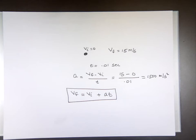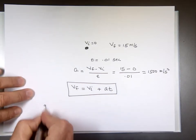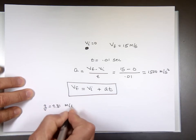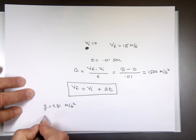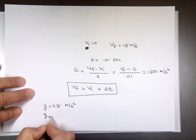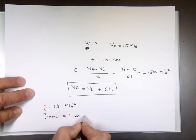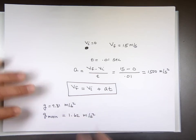Gravity on the Moon, by the way, is almost one-sixth of gravity on Earth. Gravity on Earth is 9.81 meters per second squared. On the Moon, gravity is 1.62 meters per second squared. So you can lose a lot of weight if they just send you to the Moon!